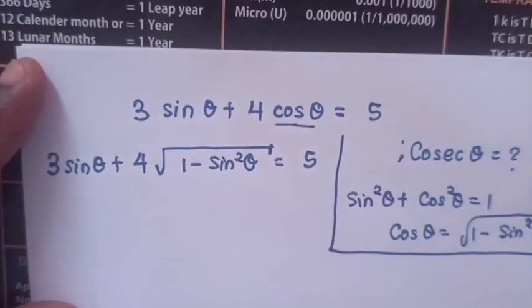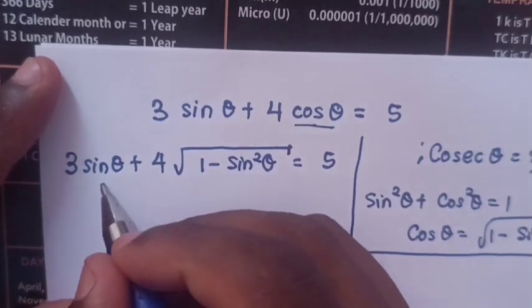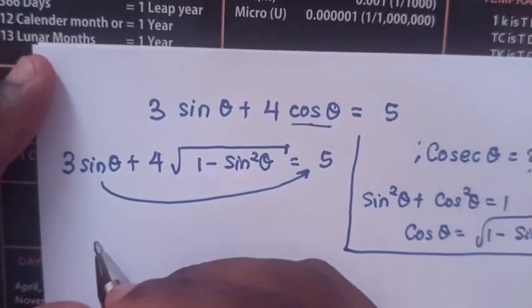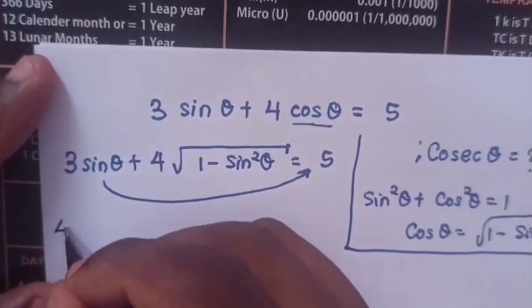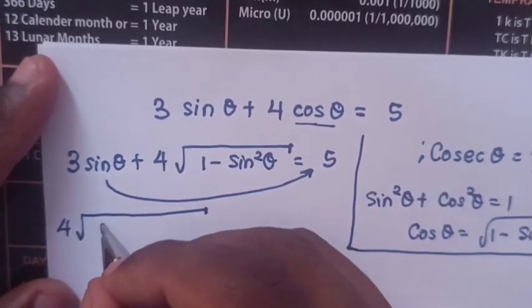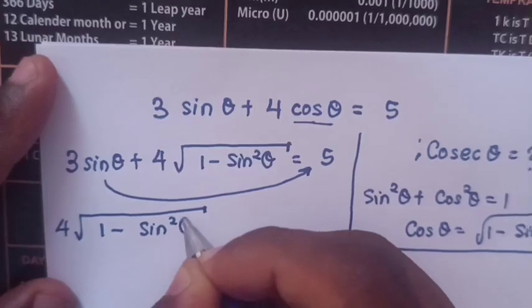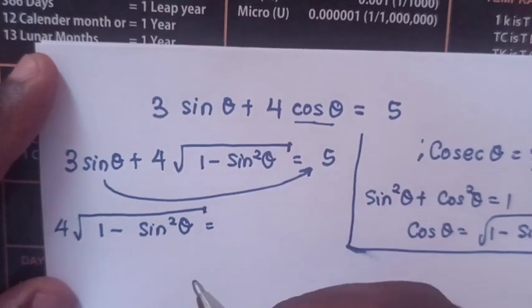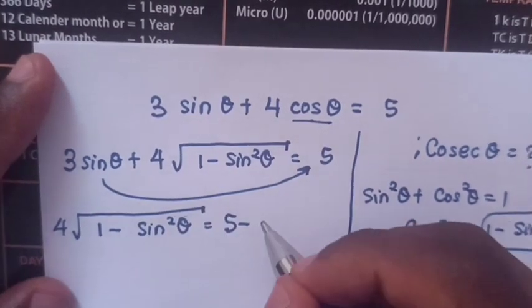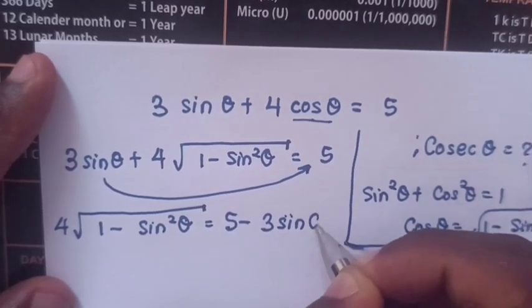Then we take 3 sin θ to the right side, so our equation becomes 4√(1 − sin²θ) = 5 − 3 sin θ.